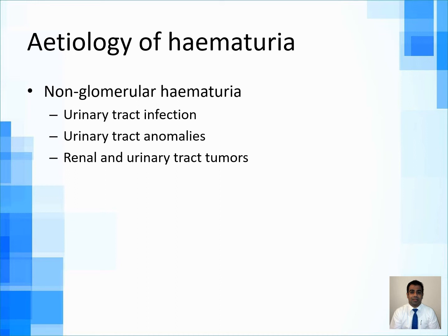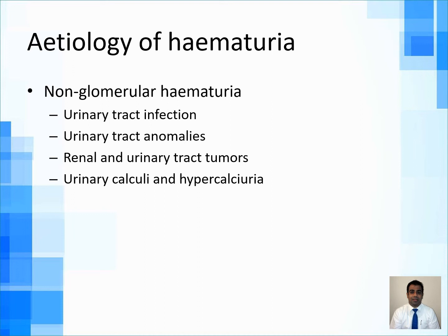Renal and urinary tract tumors are not common in children but are a common cause in adults — bladder tumors and renal cell carcinoma can cause hematuria. The common pediatric entity is Wilms tumor, a kidney tumor in very small children who can present with a renal mass and hematuria. Urinary calculi cause painful hematuria with loin-to-groin radiation, but hypercalciuria per se — without calculi — can also cause hematuria alone.